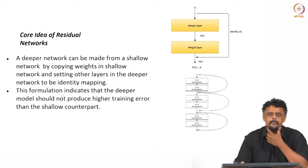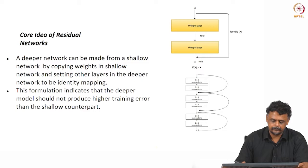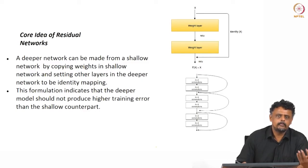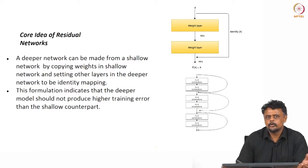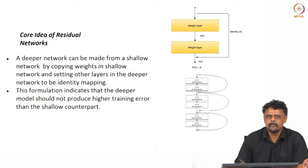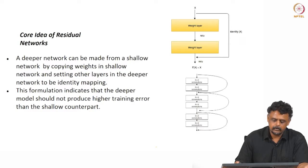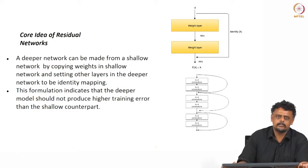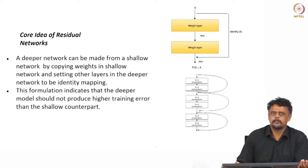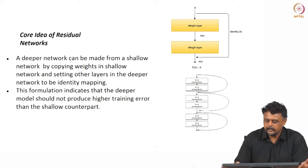So what is the principle behind how residual networks work? By construction, we know that a shallow network seems to work well. We use the weights of the shallow network to construct a much deeper network, and wherever we have gaps we simply use identity connections — identity mappings. This is just by construction, though real networks are trained from scratch via backpropagation. The general idea is that a deeper network's training and testing error should not be higher than that of the shallower network — that is the intuition.